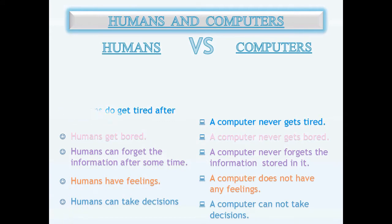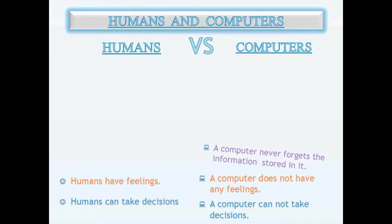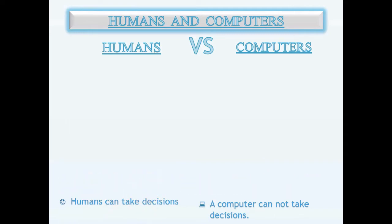Third, humans get tired after some time, but a computer never gets tired. Four, humans get bored, but a computer never gets bored. Five, humans forget information after some time, but a computer never forgets the information stored in it. Six, humans have feelings, but a computer does not have any feelings. Seven, humans can take decisions, but a computer cannot take decisions.